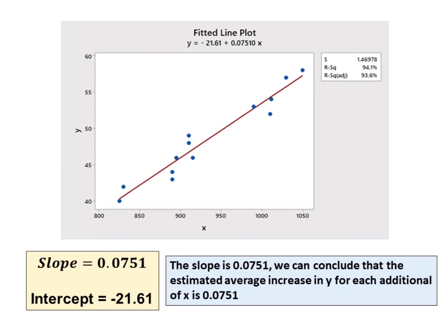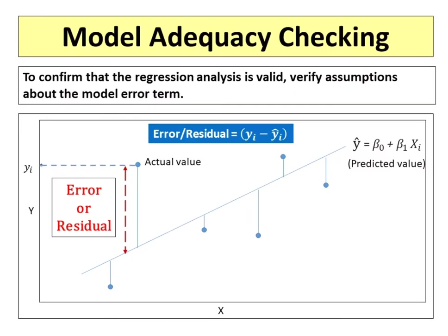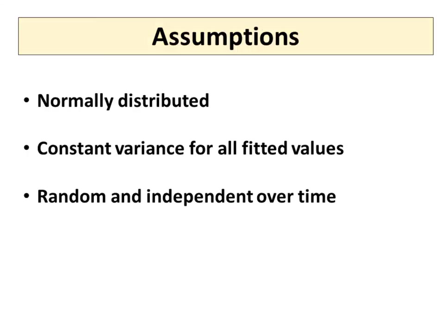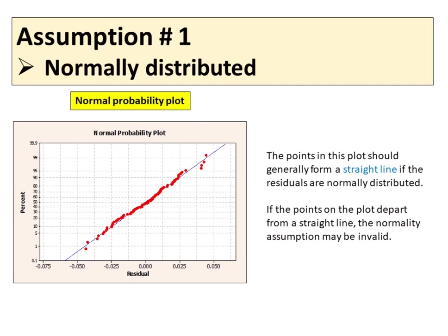The slope is 0.0751. We can conclude that the estimated average increase in Y for each additional unit of X is 0.0751. To confirm that the regression analysis is valid, verify assumptions about the model error term. The three major assumptions are: normally distributed, constant variance for all fitted values, and random and independent over time. A method of checking the normality assumption is to construct a normal probability plot of the residuals. The points in this plot should generally form a straight line if the residuals are normally distributed. If the points depart from a straight line, the normality assumption may be invalid.